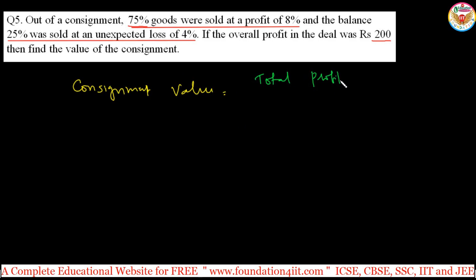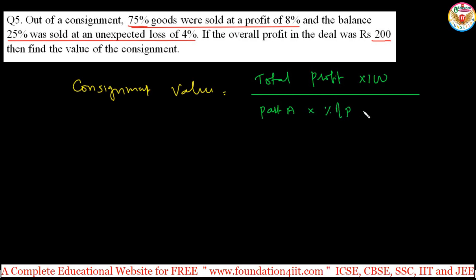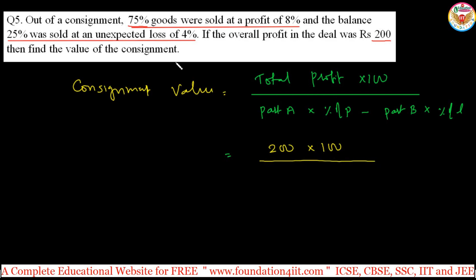Same theory as the third problem: consignment value equals total profit into 100 by (part A into percentage of profit minus part B into percentage of loss). Total profit is 200, so: 200 into 100 by (75 into 8 minus 25 into 4). That is 20,000 by (600 minus 100), giving 20,000 by 500. You simplify to get the answer.